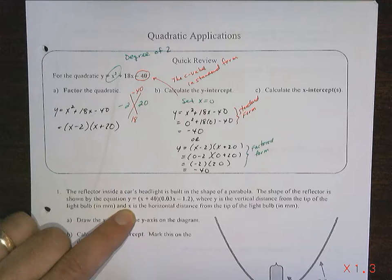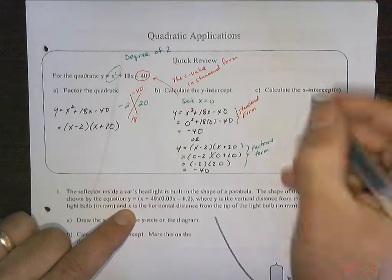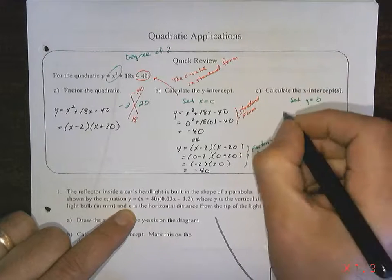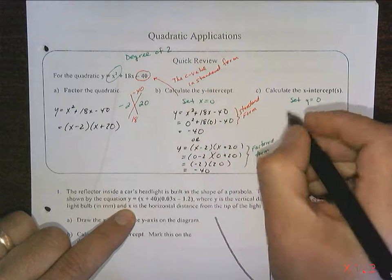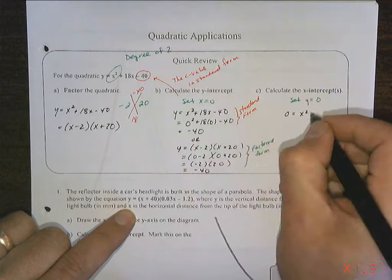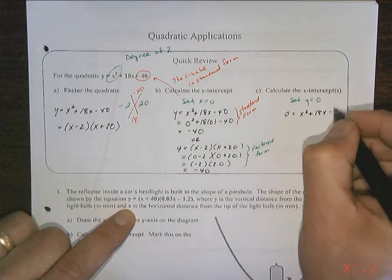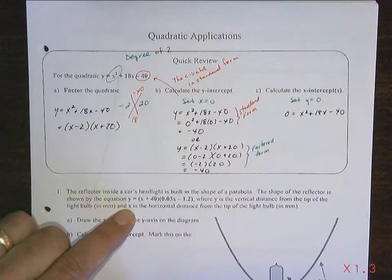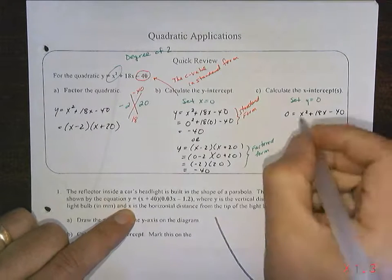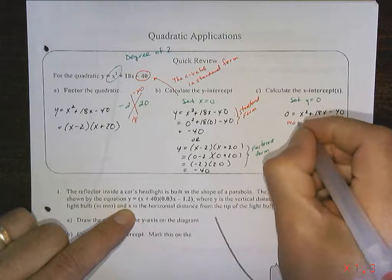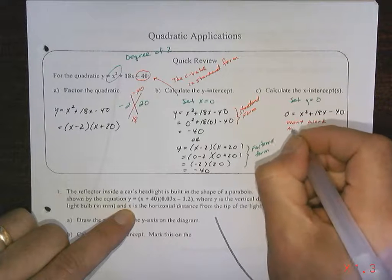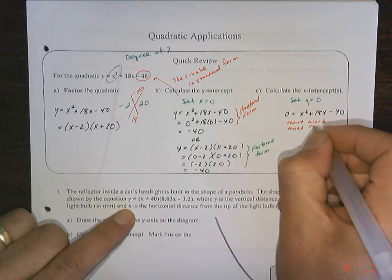Calculate the x-intercepts. Well, when we go to do the x-intercepts, you're going to set y equal to 0. That means what we're going to get, if I work in standard form, is this. And this is not solvable. You cannot solve this. It will not work for us until we solve it by factoring first.